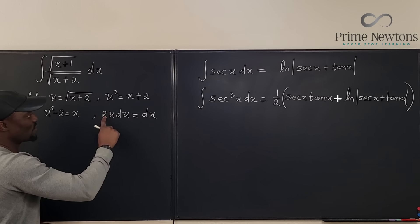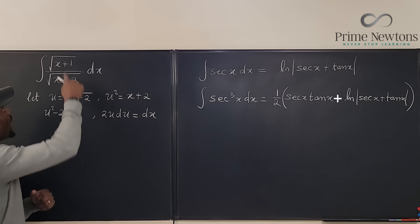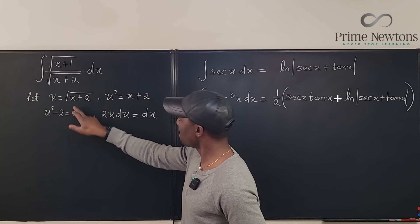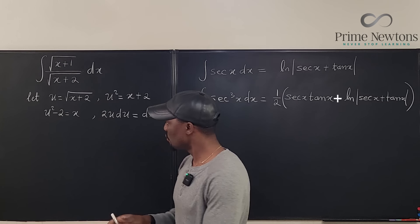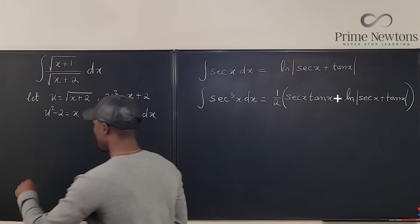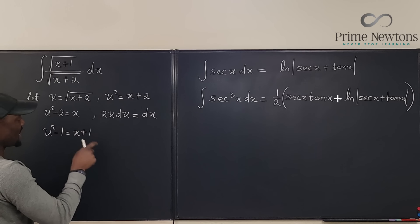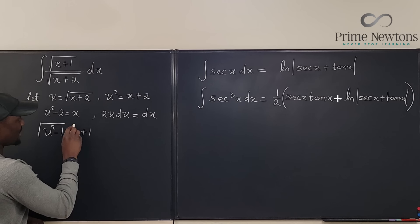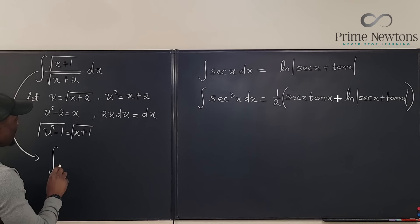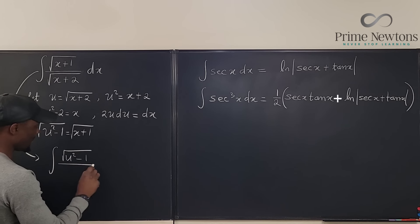I'm going to replace dx with 2u du. Now I need to handle x plus one. Since u squared minus two equals x, adding one to both sides gives u squared minus one equals x plus one. Taking the square root of that gives the square root of u squared minus one.